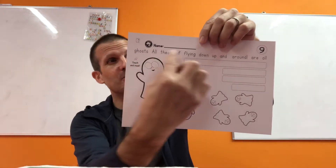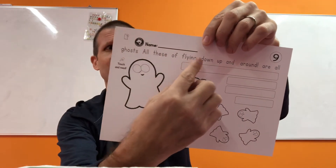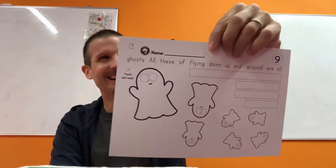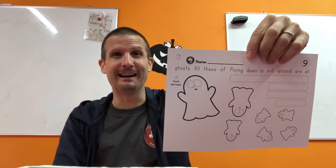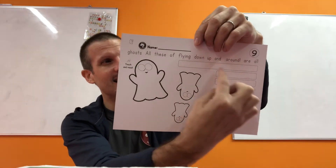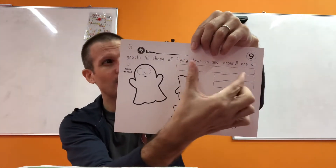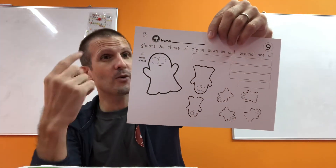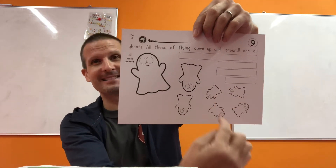Oh look at this — you have to de-scramble this sentence up here. This sentence is not correct: 'Ghosts all these of flying down up and around are all?' So here you have to de-scramble the sentence and write it inside the rectangles. Remember your spacing when you're writing — don't crunch everything into one line. Make sure you have space, separate. And Greg's going to tell you what color their eyes are, so get ready for that. Up, down, and all around — that's neat, right?